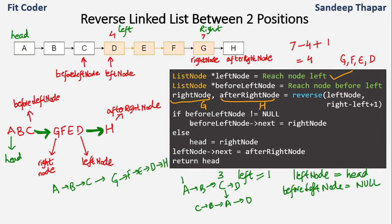The logic is simple: we just need four pointers — before the sublist and after the sublist, plus the reverse pointers. Once we have the reversed portion of the linked list, we simply connect the before part with the reversed part, and then with the after part.